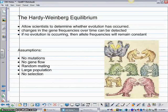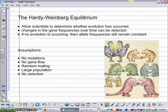So their model, their equilibrium, basically allows scientists to determine whether or not evolution is occurring in the population. By that we just mean it allows them to measure the changes in gene frequencies over time. So if there's no evolution occurring, then the gene frequencies are going to remain constant.